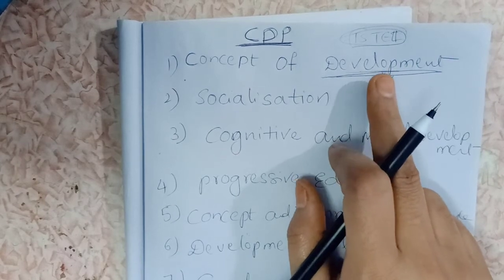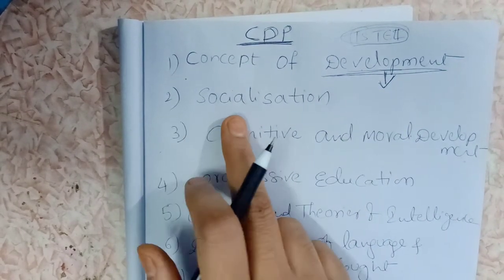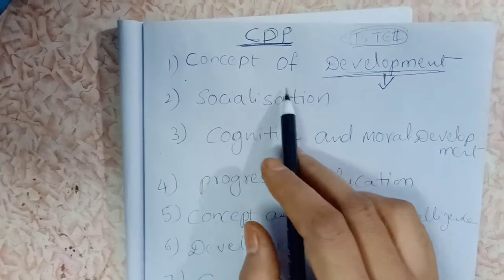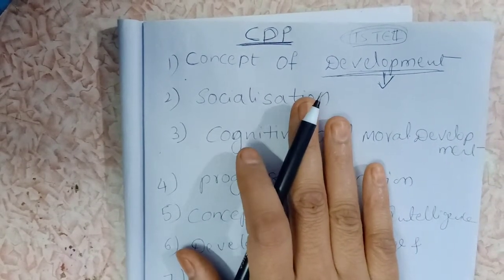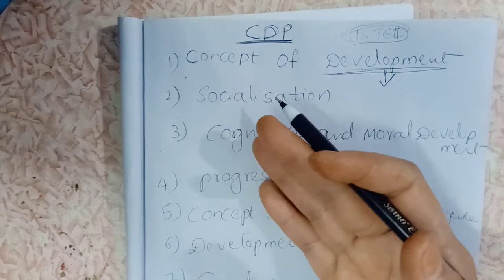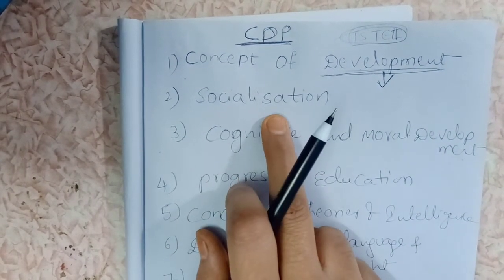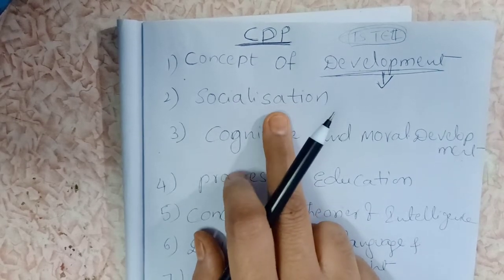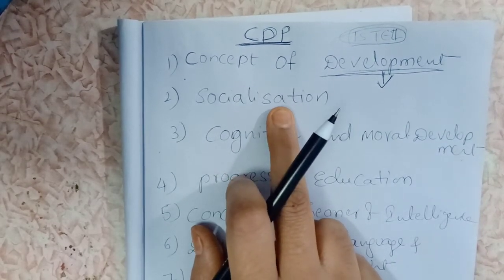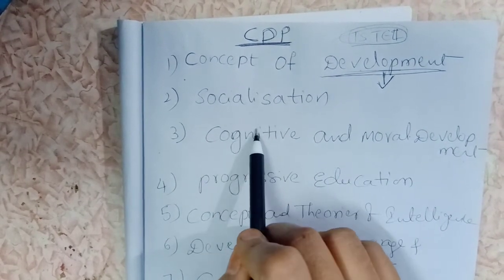After completing each topic, we shall do bits on that concept as well as previous bits. Next is socialization. Under this topic, concepts like the looking-glass theory, 'I and Me,' theory of mind, and types of socialization are present.